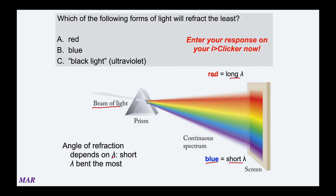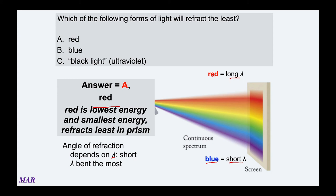Which of the following forms of light will refract the least? We have red light, blue light, and black light. Black light is a type of ultraviolet light, so it's not really appropriate here. Short wavelengths bend the most. Blue is shorter wavelength than red, which is long. So red refracts the least — relative to blue, blue would do the most bending and red would do the least.